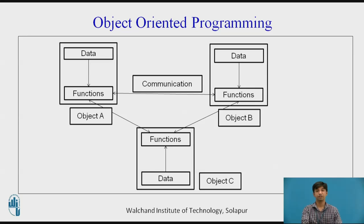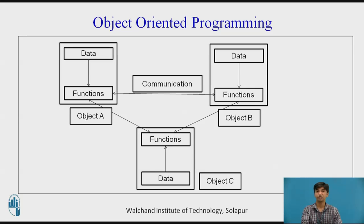Since the memory partitions are independent, objects can be used in a variety of different programs without modification. In the figure, there are three objects: object-A, object-B, and object-C, each with its own data and functions. If object-A's function wants to access the data of object-B, it communicates through objects — a message is passed to object-B's function, which then accesses the required data. This is how communication happens in object-oriented programming.